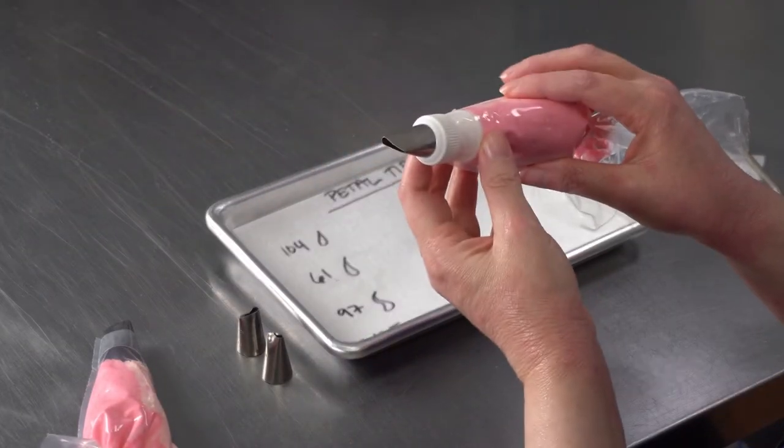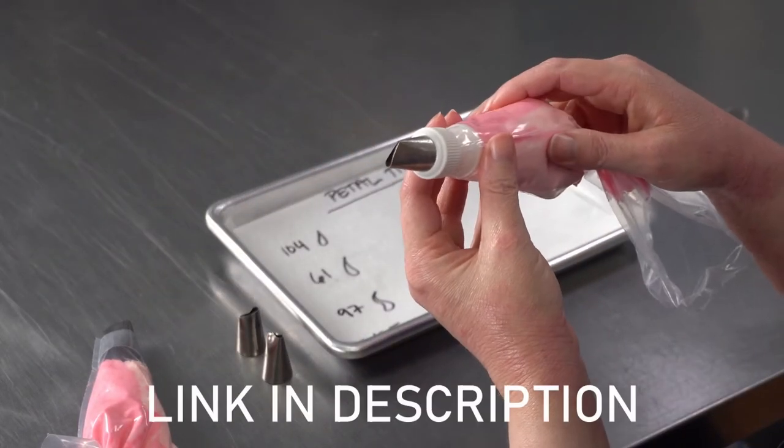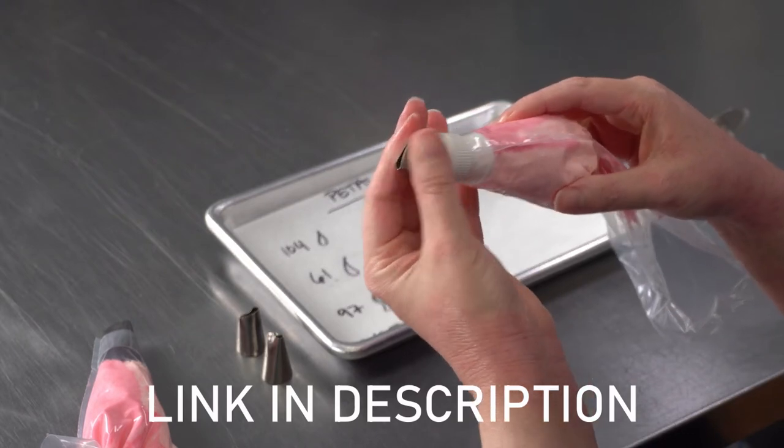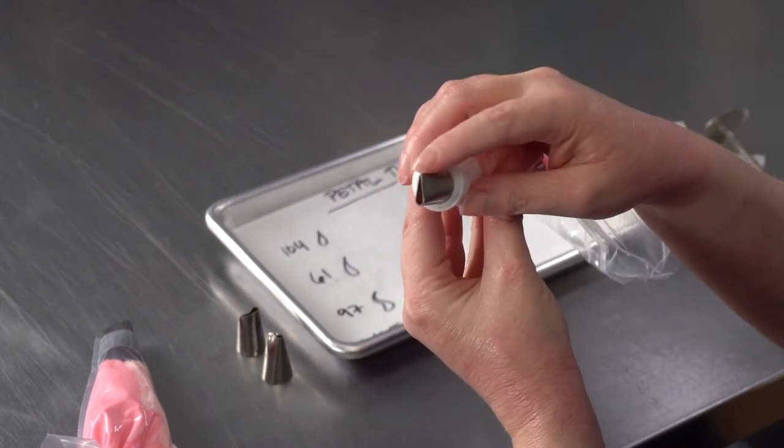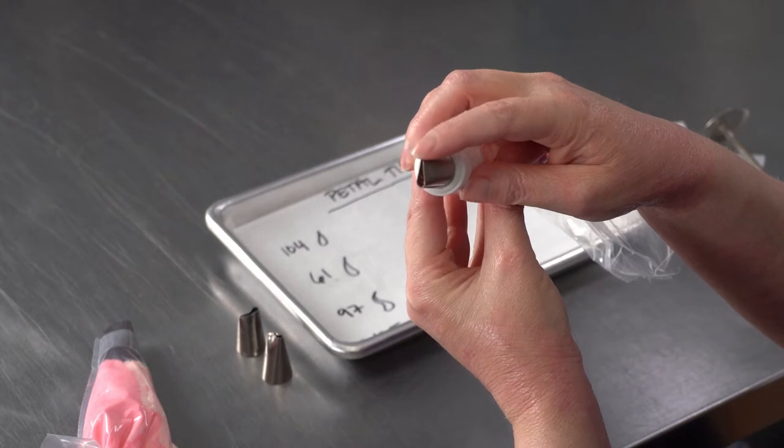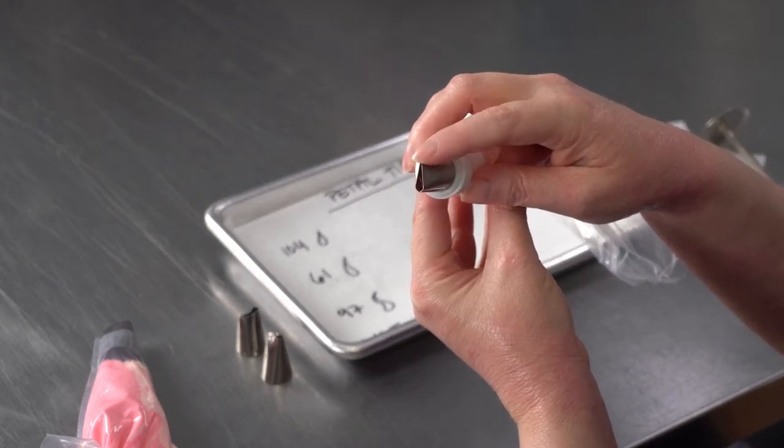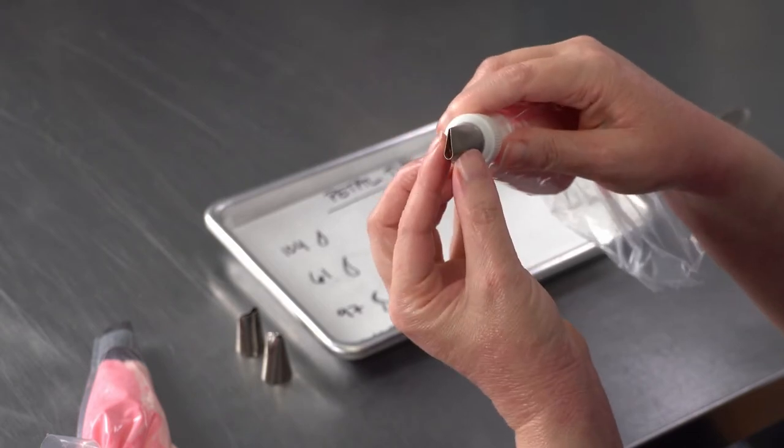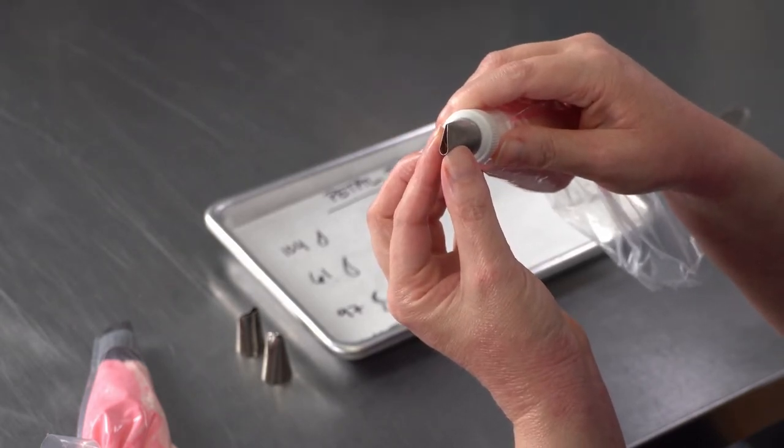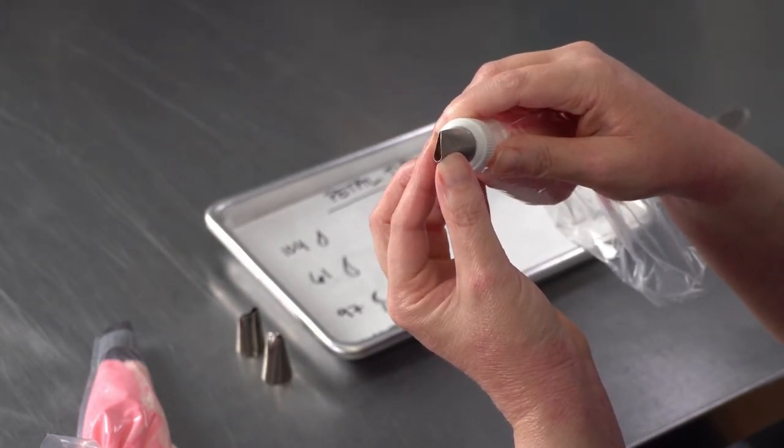These are teardrop-shaped tips. There's going to be a skinny end that usually we're holding up or to the outside, and that's going to make the edge of the petal, and a fatter end that's going to make a more stable base to your petal or inside.